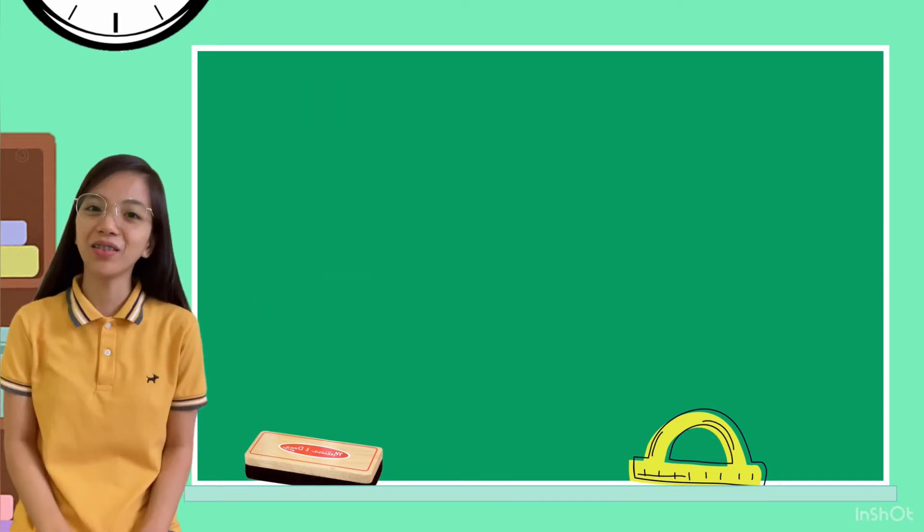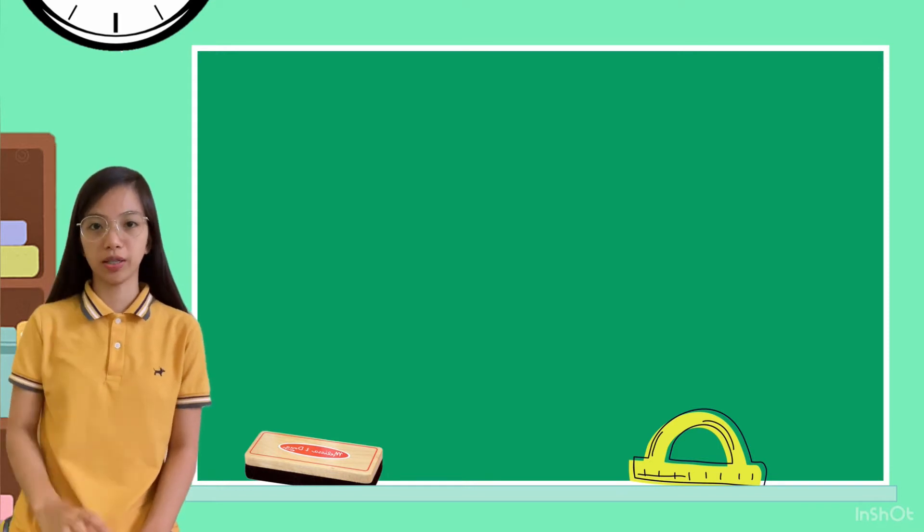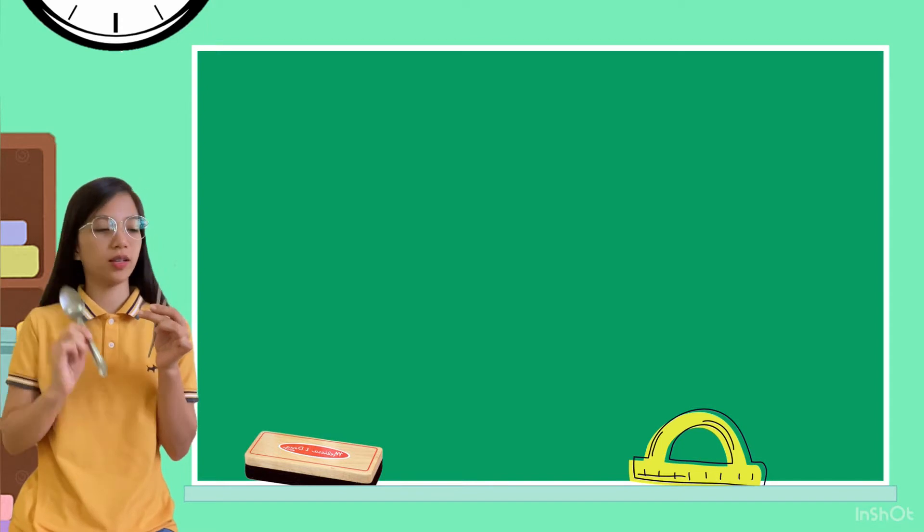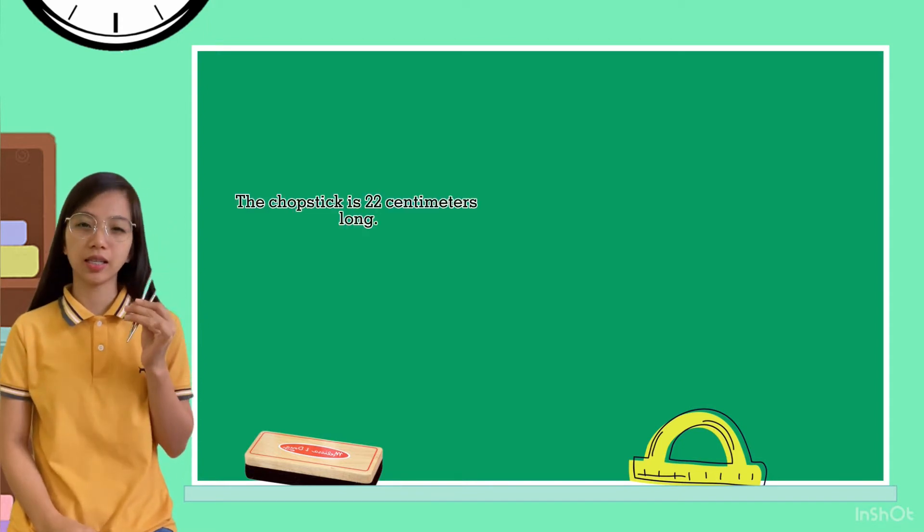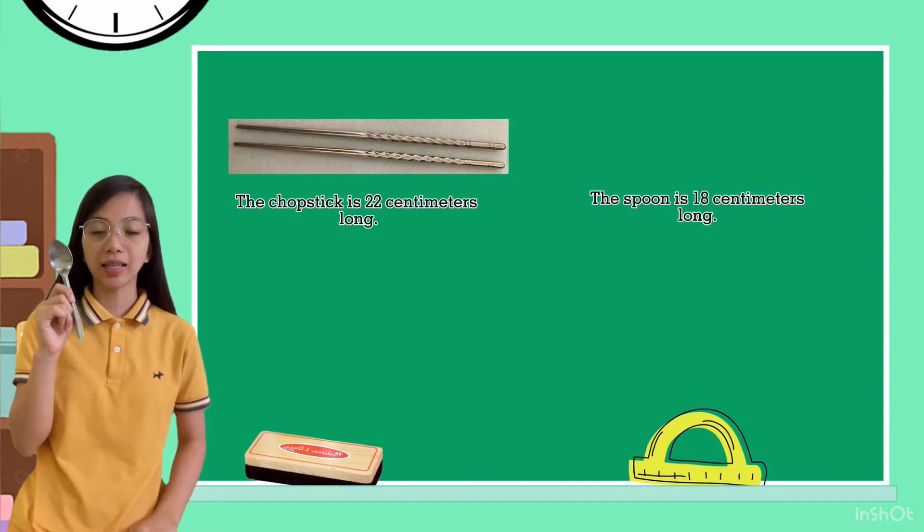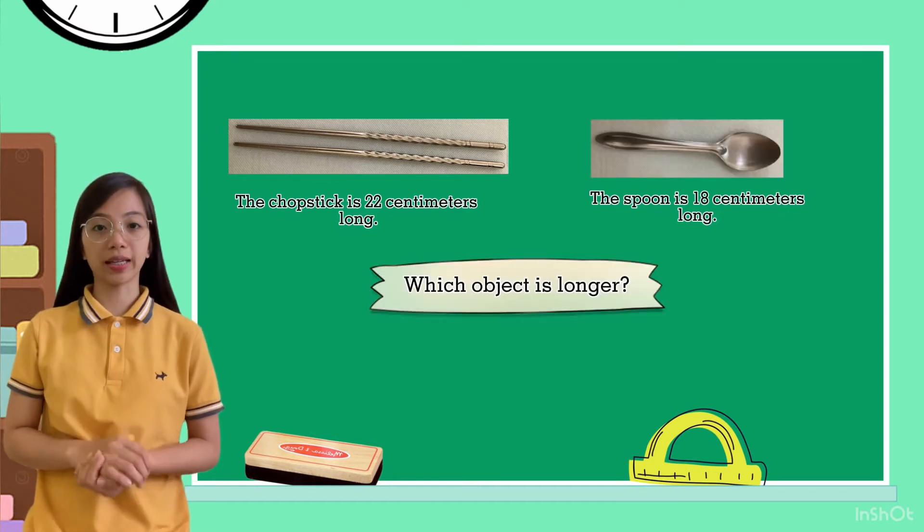Let's have an example. I have here two objects, chopsticks and spoon. The chopsticks is 22 centimeters long. The spoon is 18 centimeters long. Which object is longer?